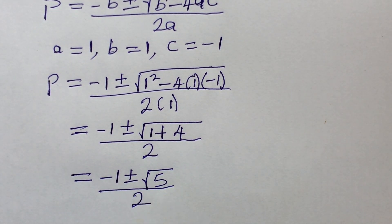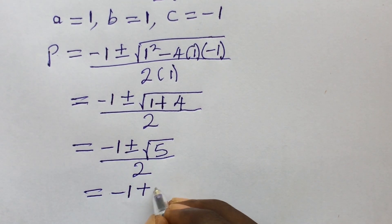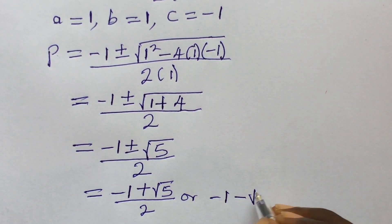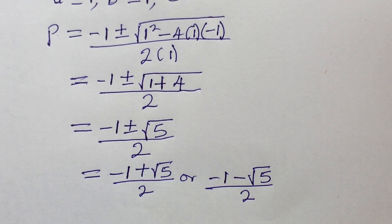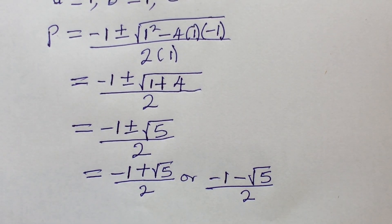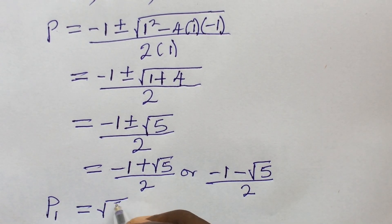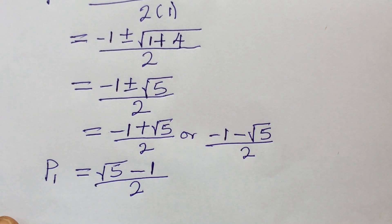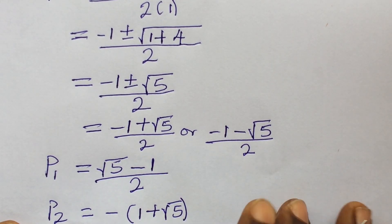We have two values of p. We can rewrite these as: p1 equals the square root of 5 minus 1, all over 2; and p2 equals negative bracket 1 plus the square root of 5, all over 2.